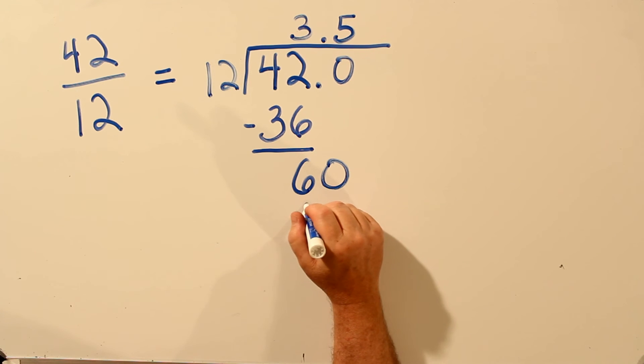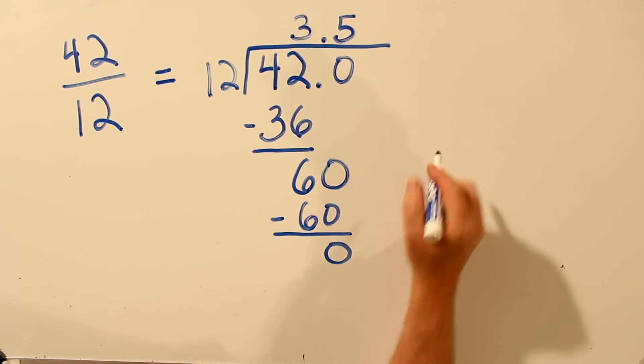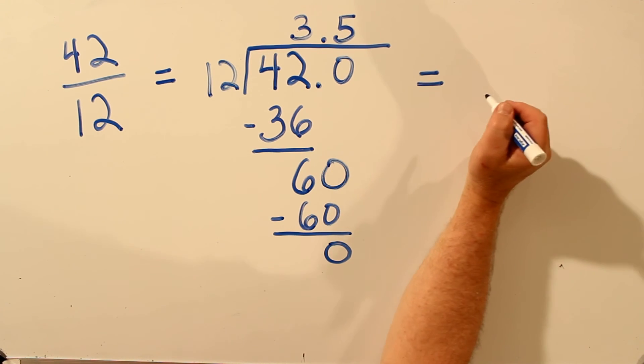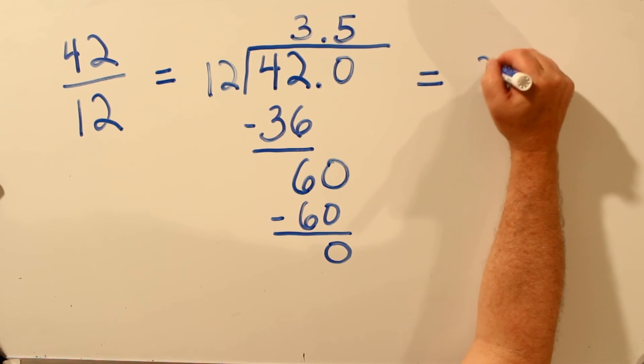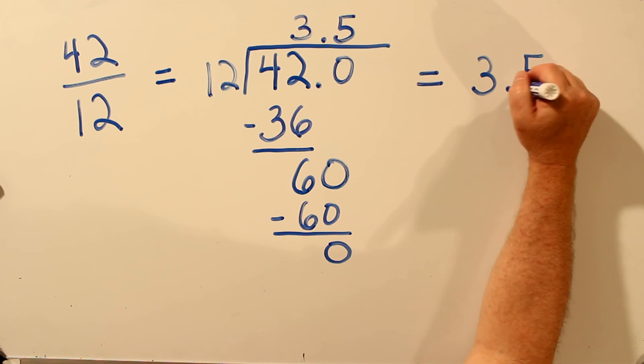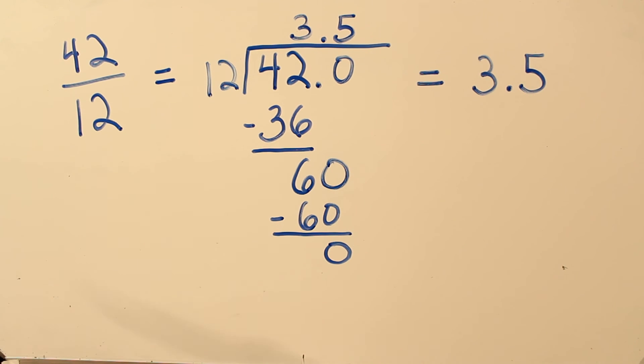5 times 12, 60. Remainder is 0, so we're done. 42 twelfths, written as a decimal, is 3.5. And that's how you convert a fraction to a decimal.